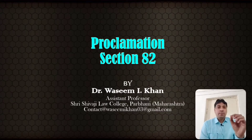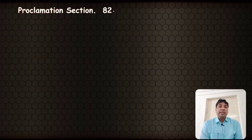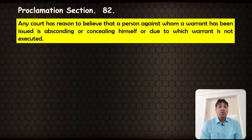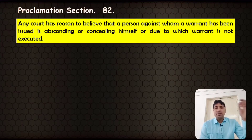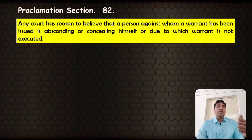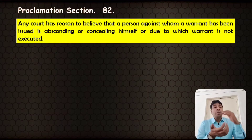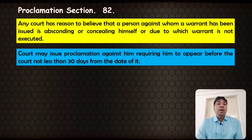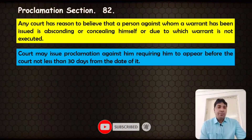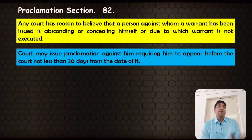Proclamation under section 82 of Criminal Procedure Code 1973 is a part and parcel of the process to compel appearance of a person. Any court that has reason to believe that a person against whom a warrant has been issued is absconding or concealing himself — due to which the warrant is not executed — under such circumstances the court may issue a proclamation against him requiring him to appear before the court not less than 30 days from the date of it.